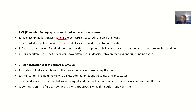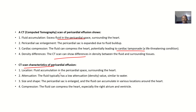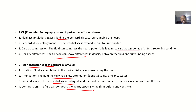There will also be cardiac compression — the fluid can compress the heart, and this will potentially lead to what is known as cardiac tamponade, which is a life-threatening condition. The CT scan can also show differences in density between the fluid and the surrounding tissue. The fluid typically has a low attenuation, that's a low density, similar to water. The pericardial sac is well enlarged and the fluid can accumulate in various locations around the heart, compressing especially the right atrium and the ventricle.